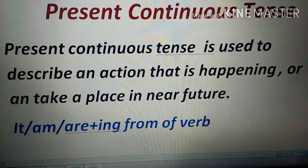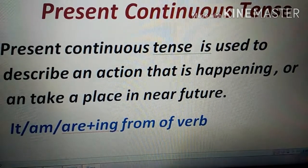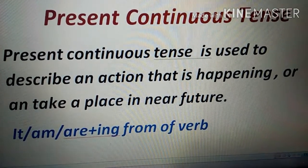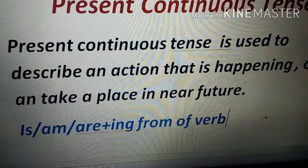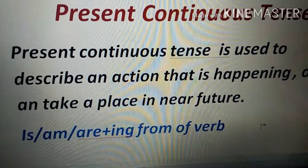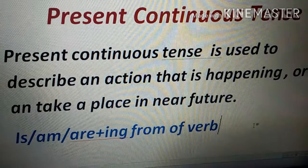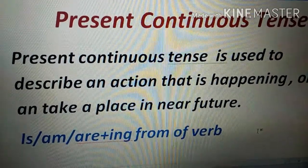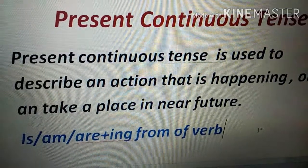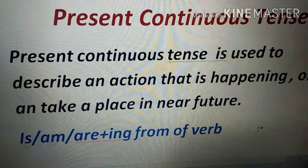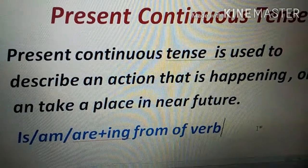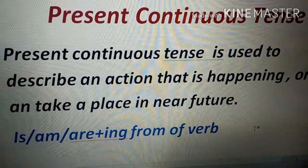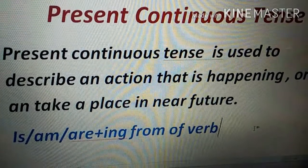We use one of 'is,' 'am,' or 'are' depending on the subject. 'Is' is always used with singular subjects — she, he, or any singular subject. 'Are' is always used with plural subjects. 'Am' is used exclusively with 'I.' For example: 'I am leaving for the market.' So with singular use 'is,' with plural use 'are,' and with 'I' always use 'am.'